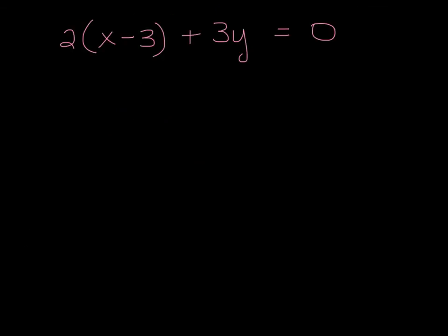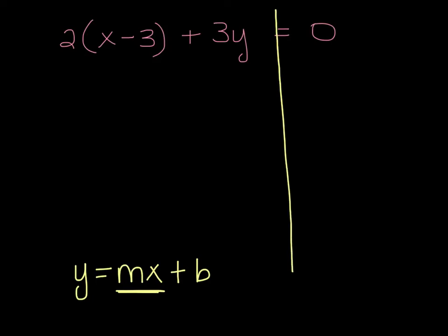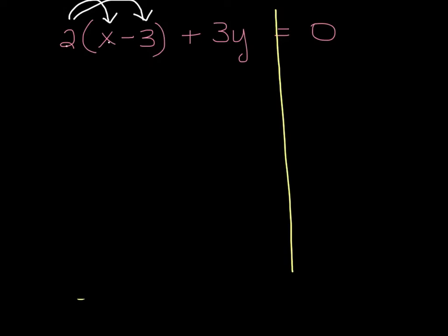We're going to solve another one and rewrite it in slope-intercept form. Anytime you get directions to rewrite in slope-intercept form, you want to write it so it says y equals, then you want the slope times x first, and then the y-intercept second. First thing I see right away is that I need to distribute — 2 times x and 2 times negative 3. Well, 2 times x is 2x, and 2 times negative 3 gives me negative 6. And that says plus 3y equals 0.